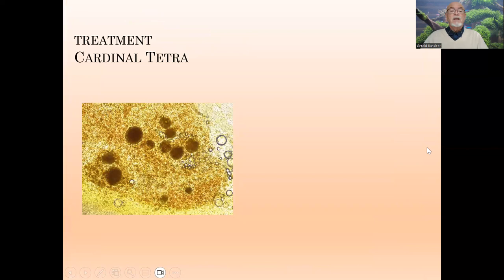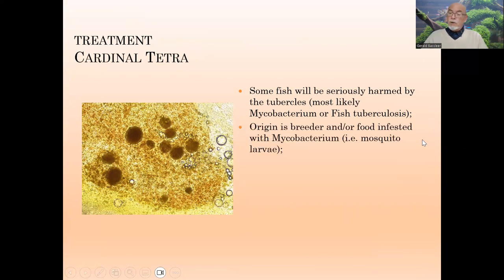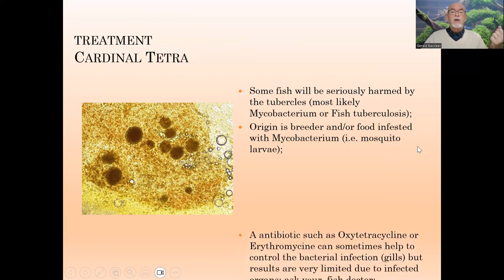The organs are badly affected, causing general health problems. Some fish might be seriously harmed due to the tubercles taking over healthy organs, and some fish may have only a little now but might develop it further over the coming weeks or months. The origin is either the breeder or food supplied that is infested with mycobacterium, which I explained in some of my videos — it can be caused by feeding fish with mosquito larvae.